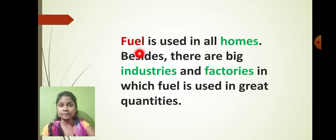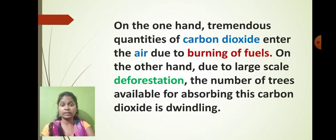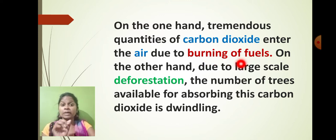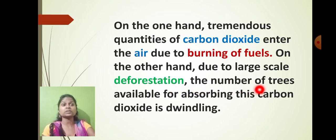At home we use fuel, and big industries and factories use fuel in larger quantities. If we keep using these fuels, a tremendous quantity of carbon dioxide enters the air, causing pollution. Carbon dioxide is produced by the burning of fuel. On the other hand, due to large-scale deforestation — cutting down trees and destroying forests — the number of trees available to absorb this carbon dioxide is dwindling.